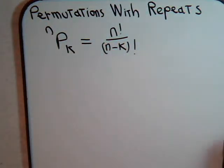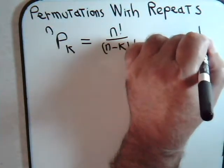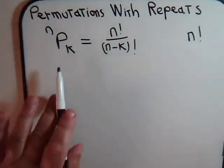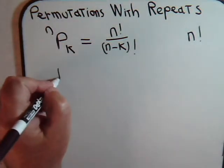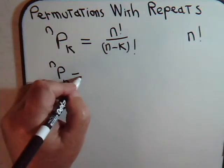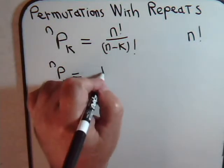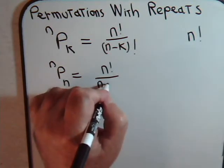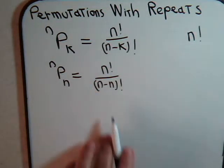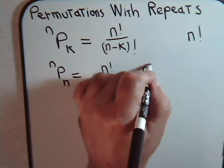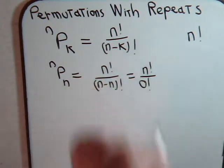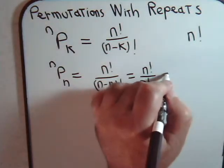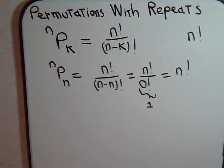Before we developed this formula we also showed that if you have n distinct objects and you select all n of them, the total number of ways is n factorial. That is consistent with this formula because it would be n factorial over n minus n factorial, which is zero factorial, and as we discussed in a previous video, zero factorial equals one. So this equals n factorial.